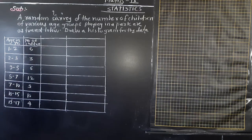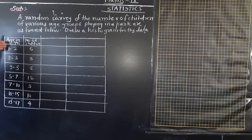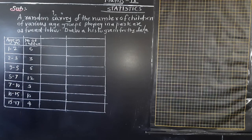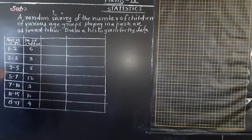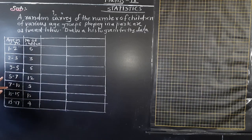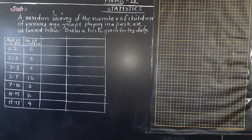One thing we know about histograms is that the intervals which are given should be continuous - that means exclusive. So here if you look at the intervals: 1 to 2, 2 to 3, 3 to 5, 5 to 7, 7 to 10, 10 to 15, 15 to 17 - these intervals are continuous, but the class size is not equal. Class size is different.